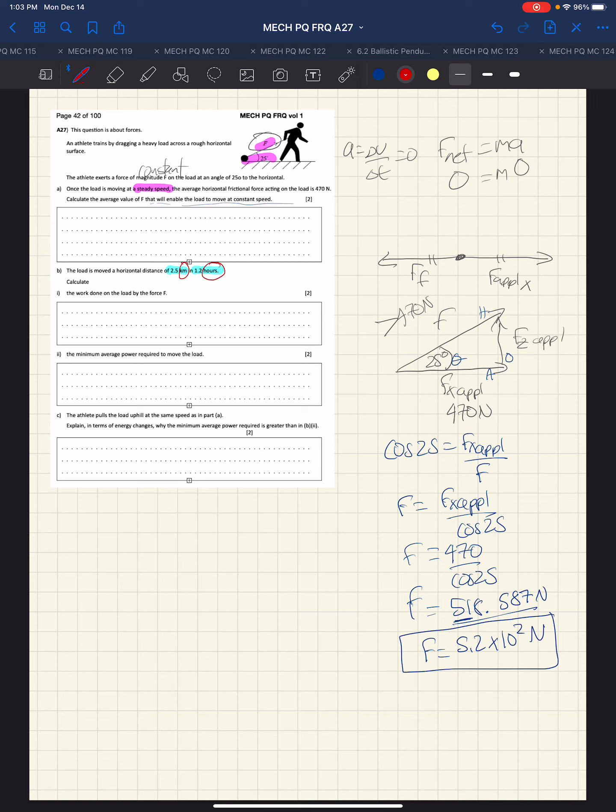We know the force applied is 470 newtons and the distance, 2.5 kilometers, is 2500 meters. That gives us a whopping 1,175,000 joules. Again, we can report only two significant digits, so that means 1.2 times 10 to the sixth joules, or 1.2 megajoules.